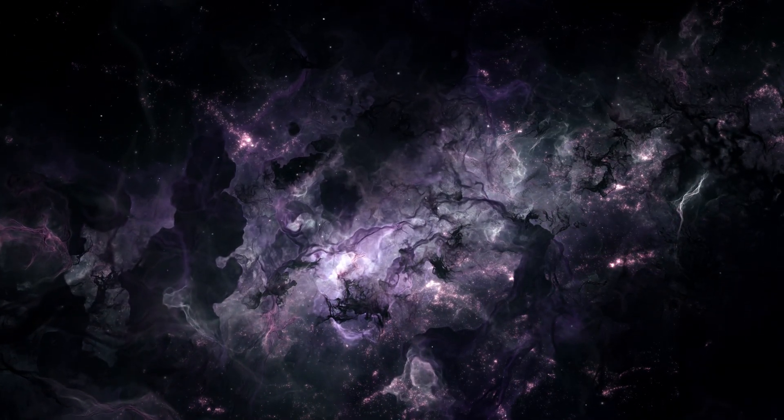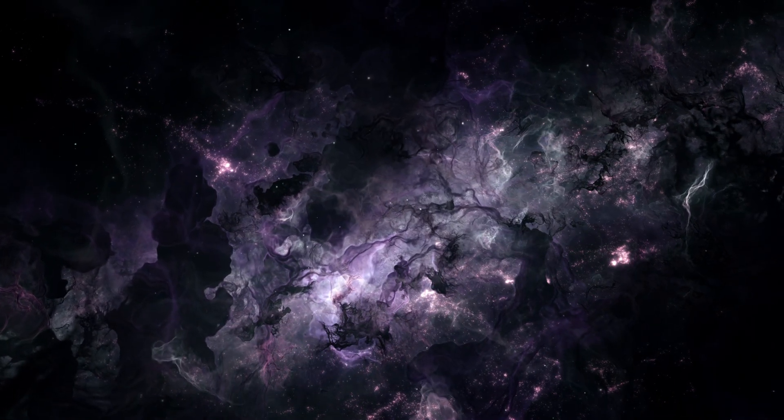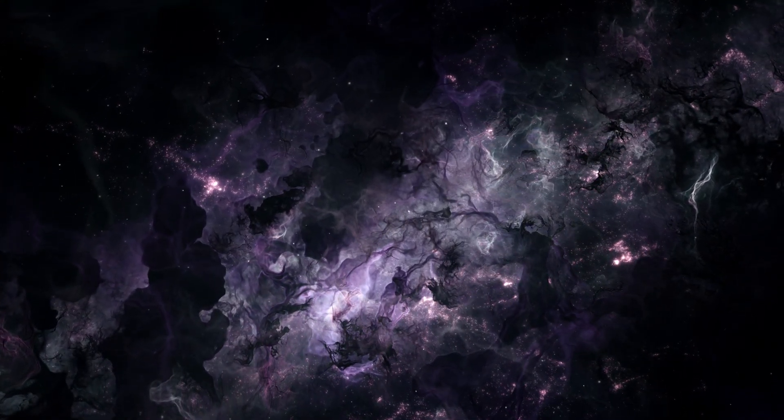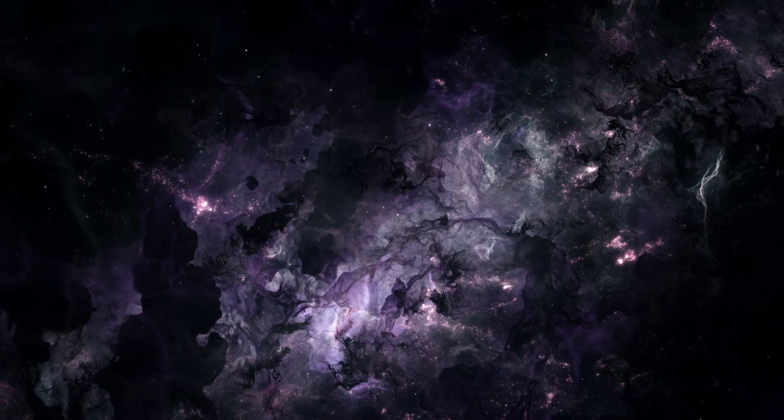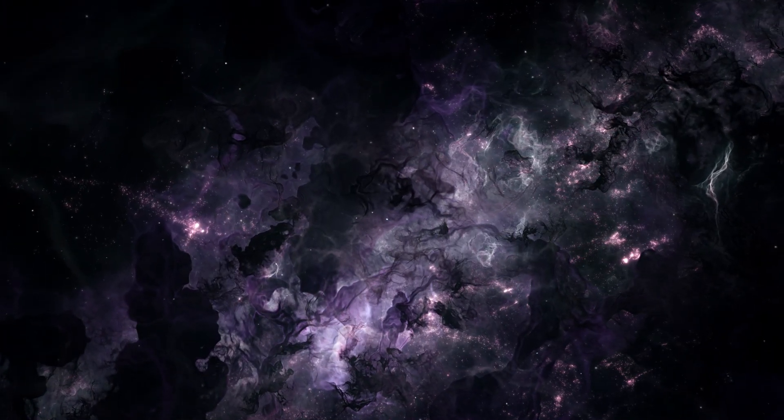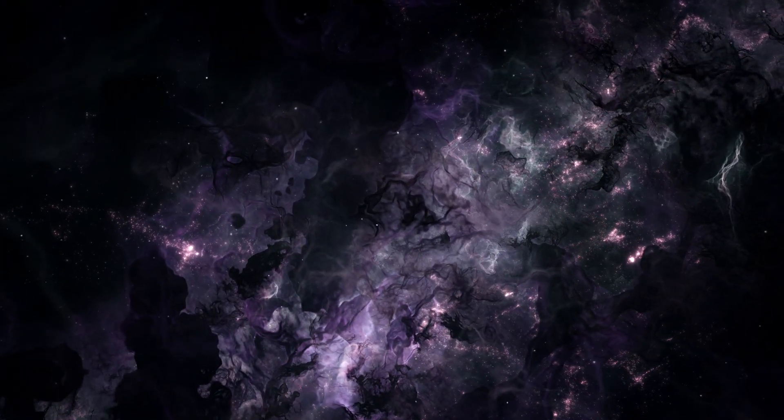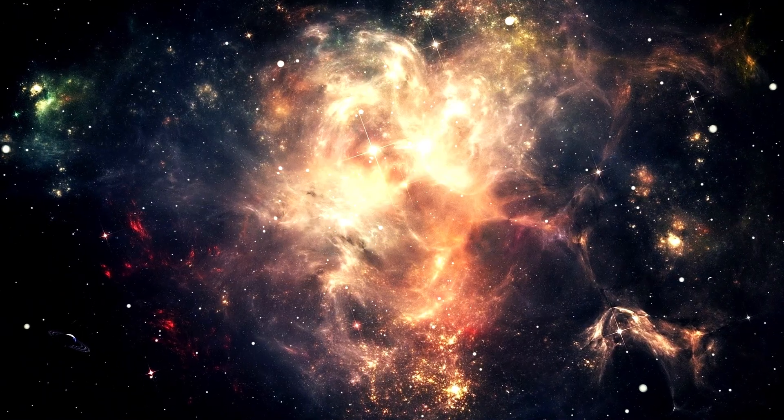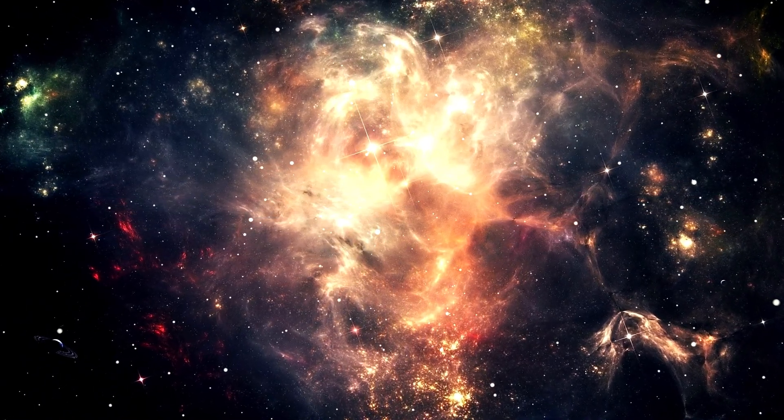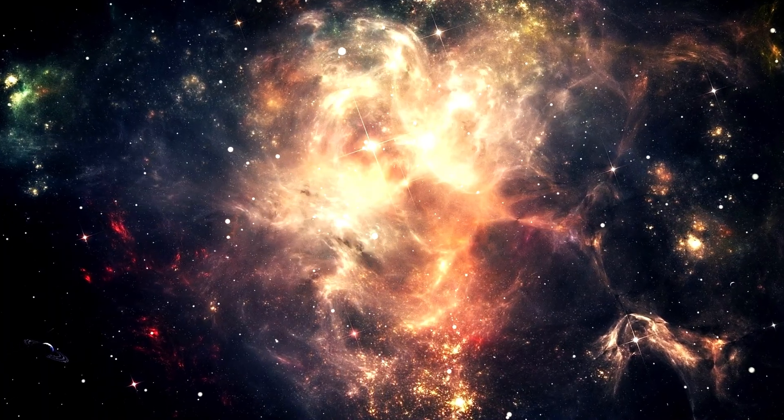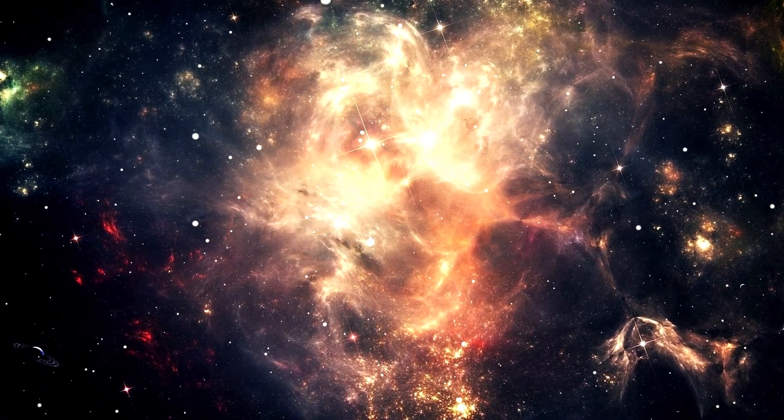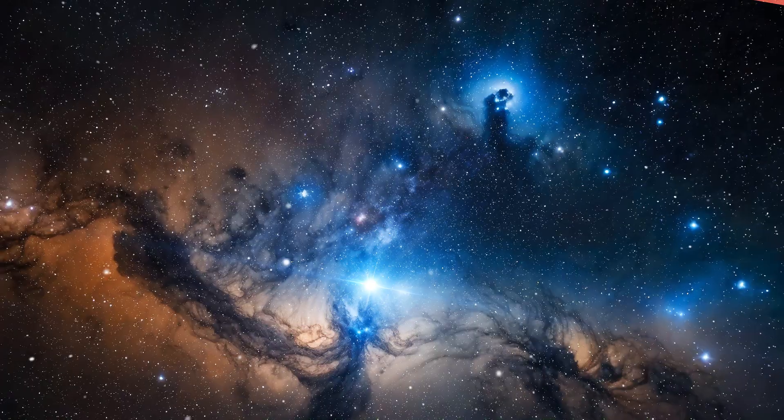As these structures developed, the voids expanded and became more empty. Instead of viewing this as a passive process, we can see the growth of voids as actively exerting pressure on the surrounding structures. For instance, as voids enlarge, the walls of galaxies between them gradually thin and may eventually dissolve, allowing voids to merge.